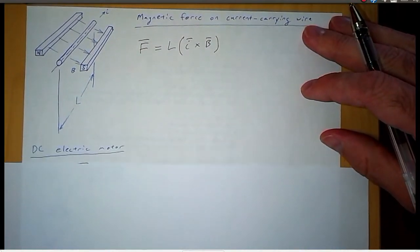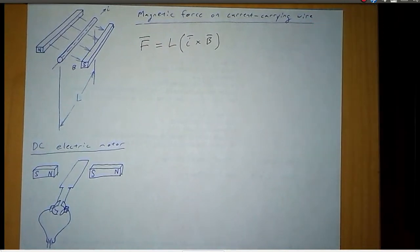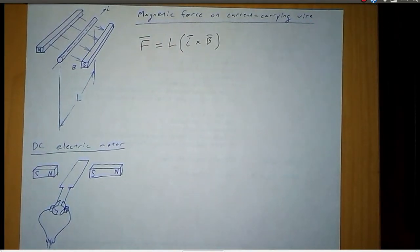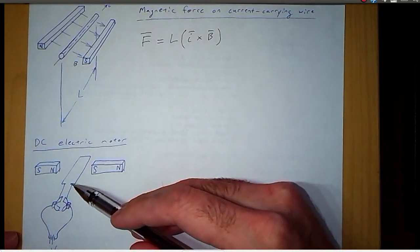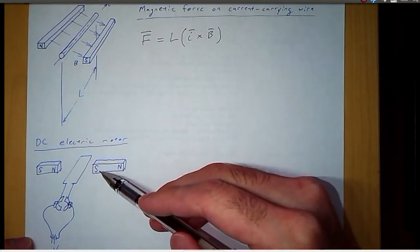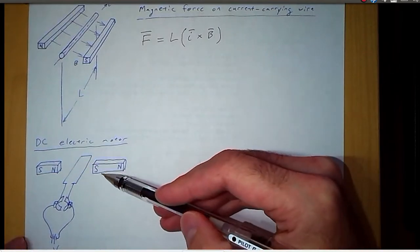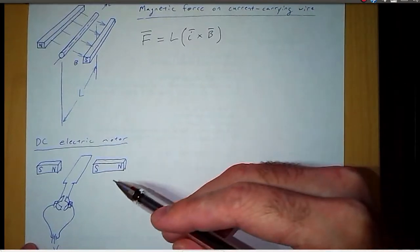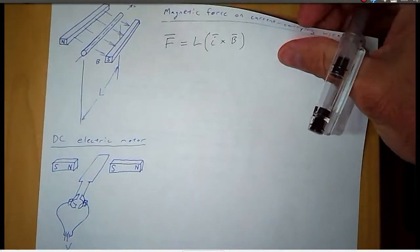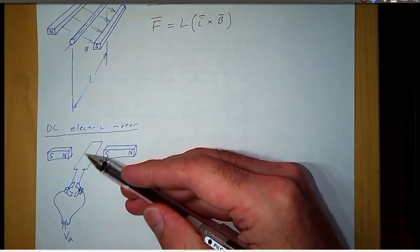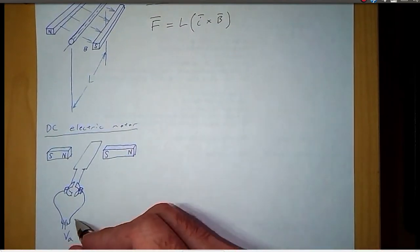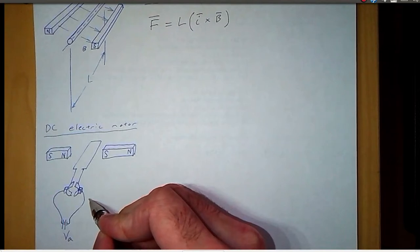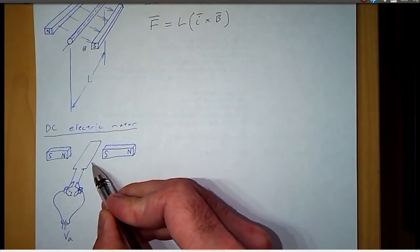Now let's look at a DC motor. Here is a simplified drawing of a DC electric motor. We have a current carrying wire — that's the part that spins, called the rotor. And we have a magnetic field generated by permanent magnets that don't move, called the stator. We have an applied voltage to this armature, which is where the current goes. This side is the higher potential and this side is the lower potential, so the current is going this way around the armature.